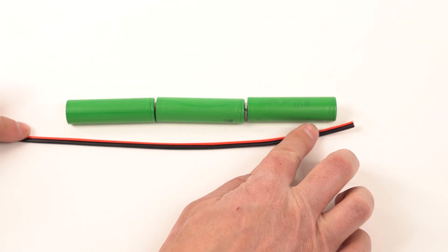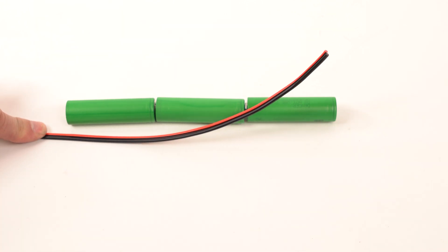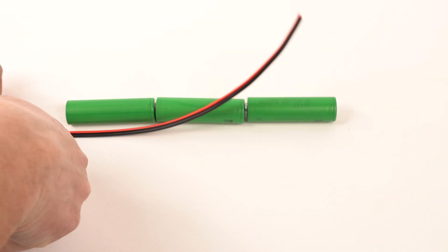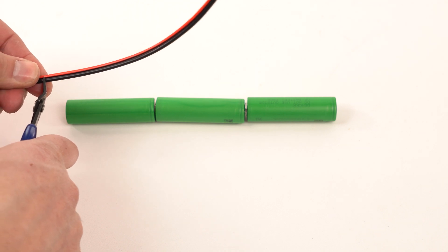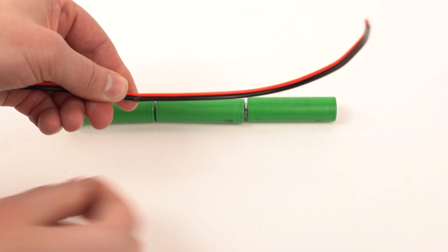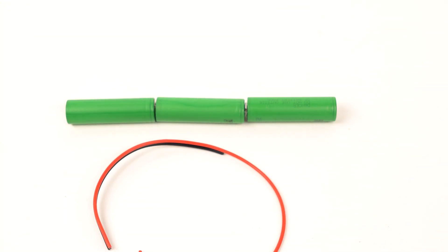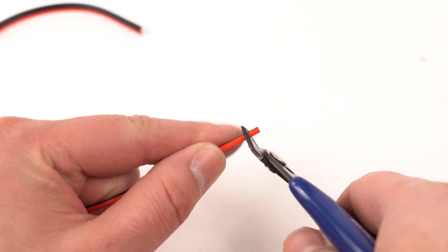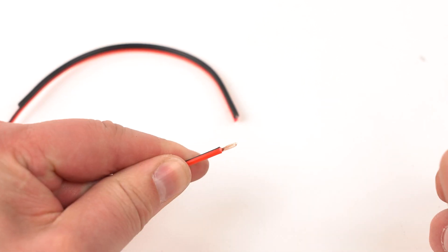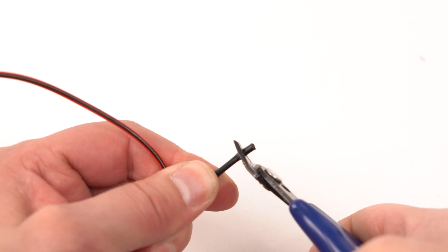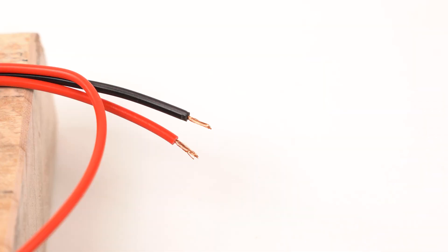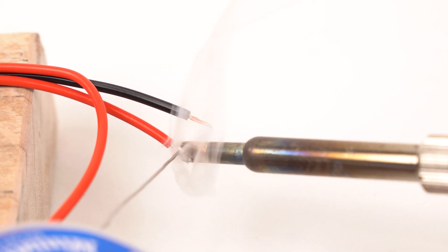Cut your wires to length. Strip the ends of your wires. Pre-tin the ends of the wires that you'll be soldering to the batteries.